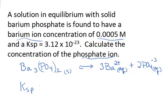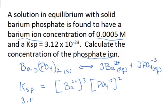Ksp is going to equal the concentration of the barium ion times the concentration of the phosphate anion raised to the second power because there's three barium ions, so it'd be barium ion cubed to save space there and then phosphate ion squared. And the Ksp value is 3.12 times 10 to the negative 23.